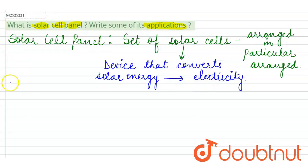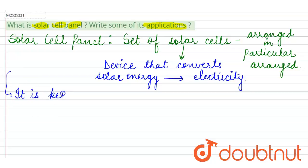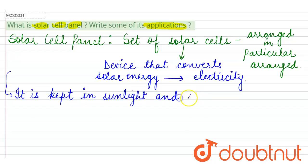This solar cell panel is kept in sunlight, shaped like an umbrella, and is connected to a battery, by which it converts solar energy into electricity.